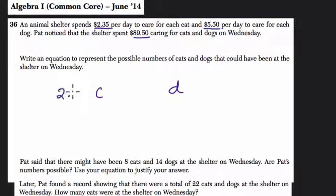Every cat, let's say there's one cat, well one cat would be $2.35. Two cats would be 2 times $2.35. And three cats would be 3 times $2.35 and so forth, so we multiply those two numbers.